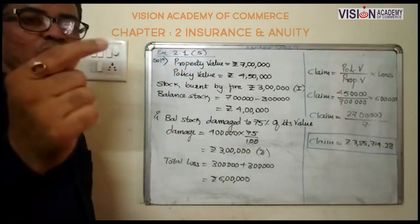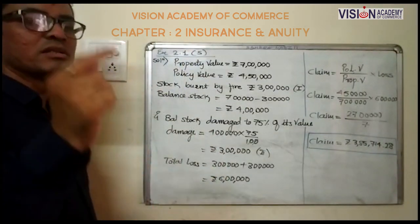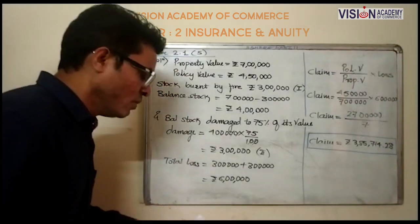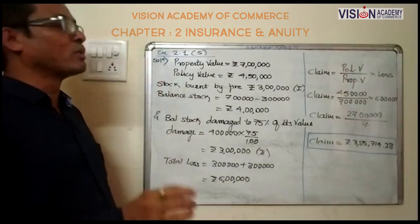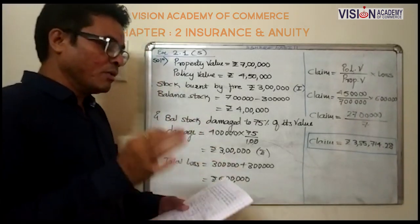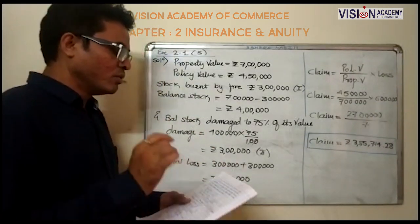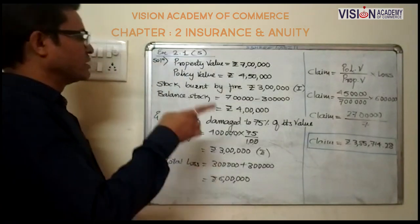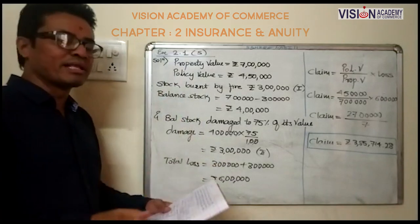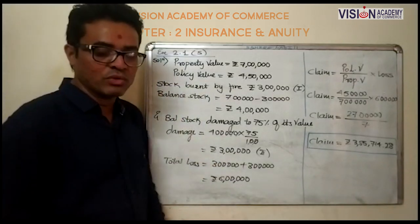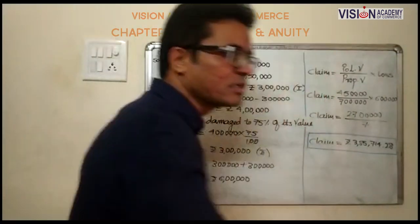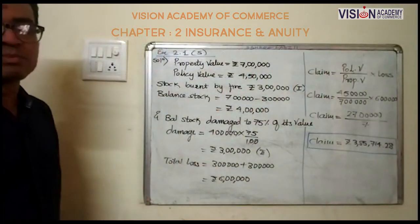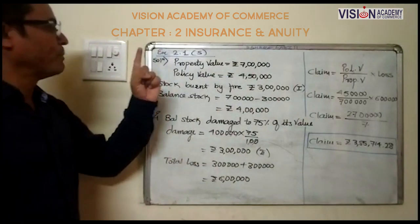Question number 5: A stock worth rupees 7 lakhs was insured for rupees 4 lakhs 50 thousand. Fire burned the stock worth rupees 3 lakhs and damaged the remaining stock to 75 percent of its value. In this question we are required to find the claim.